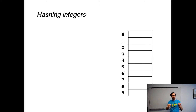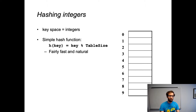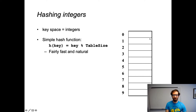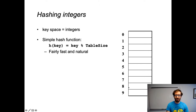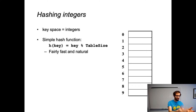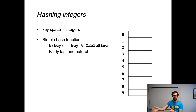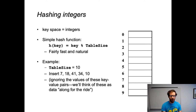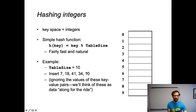Let's make this concrete with a specific example. Our key space here will be integers, and we're going to go with a simple hash function where we take our integer key and just mod it by the table size. So there are currently 10 spots in this table, and we're going to take whatever our key is — some integer — and mod it by the table size. That gives us the index into our table. This mod by table size is fairly fast, and it's a natural way to turn any number into a valid index in this table. We're going to insert these five integers: 7, 18, 41, 34, and 10.